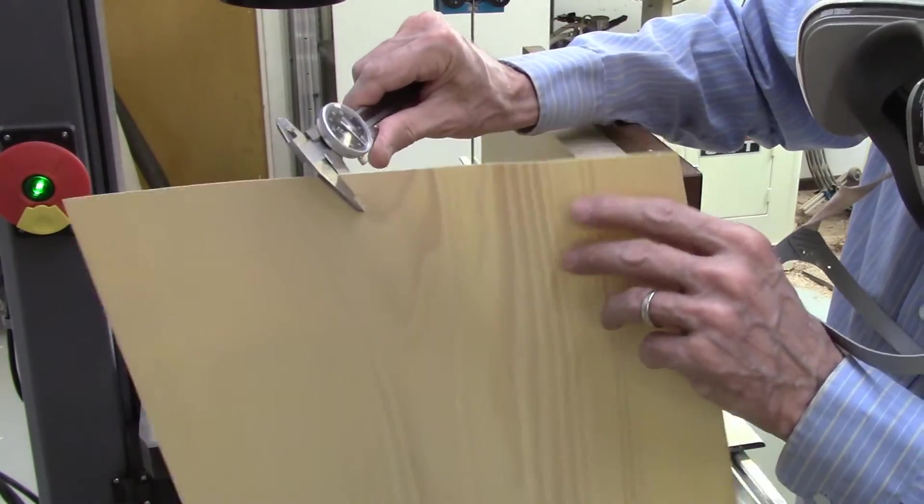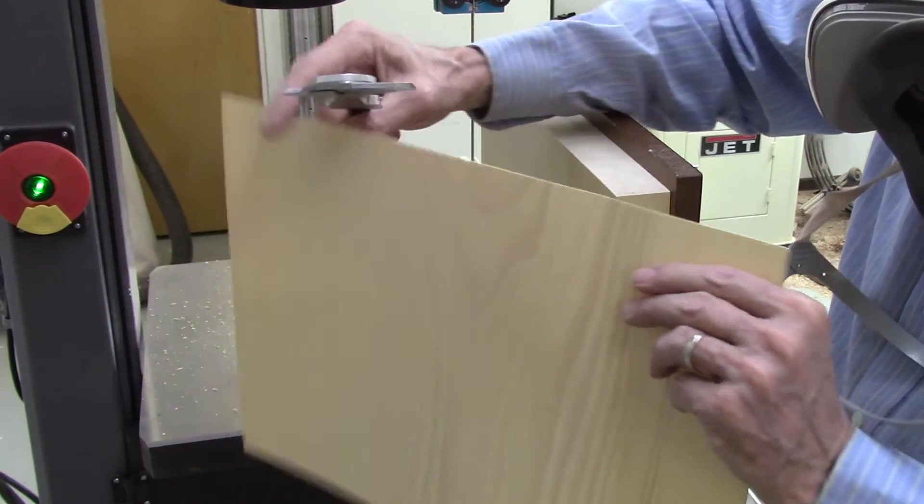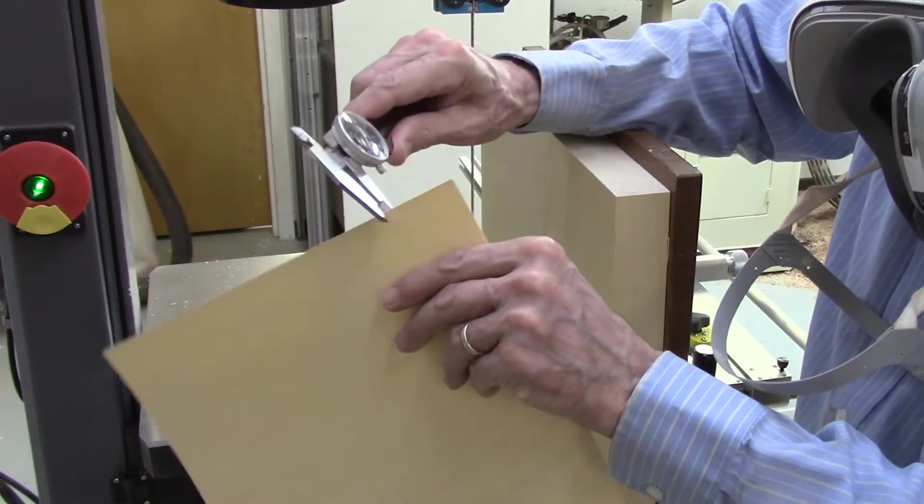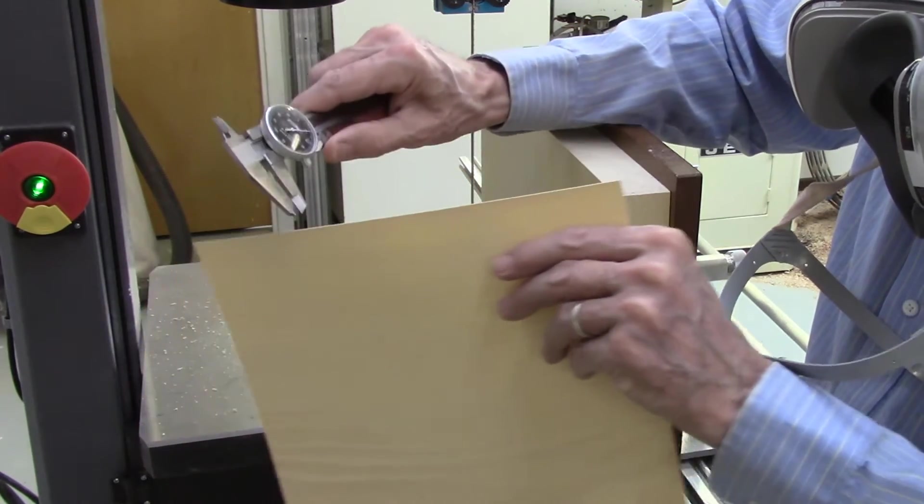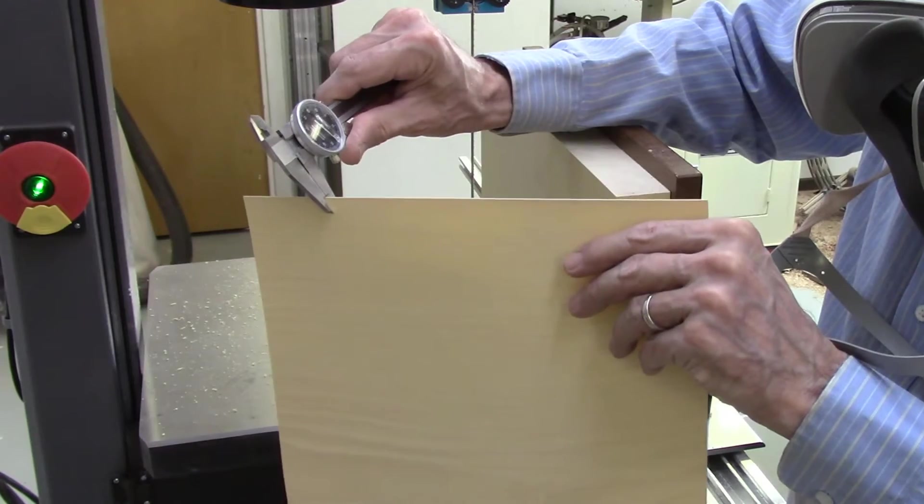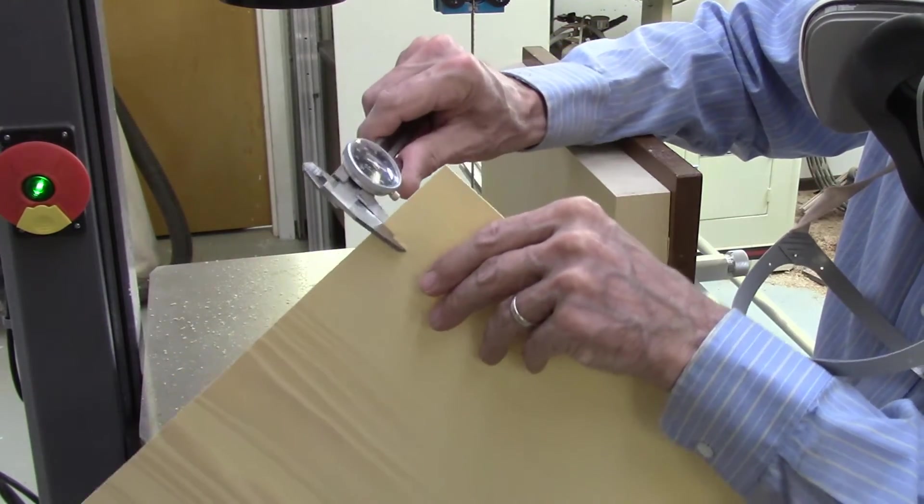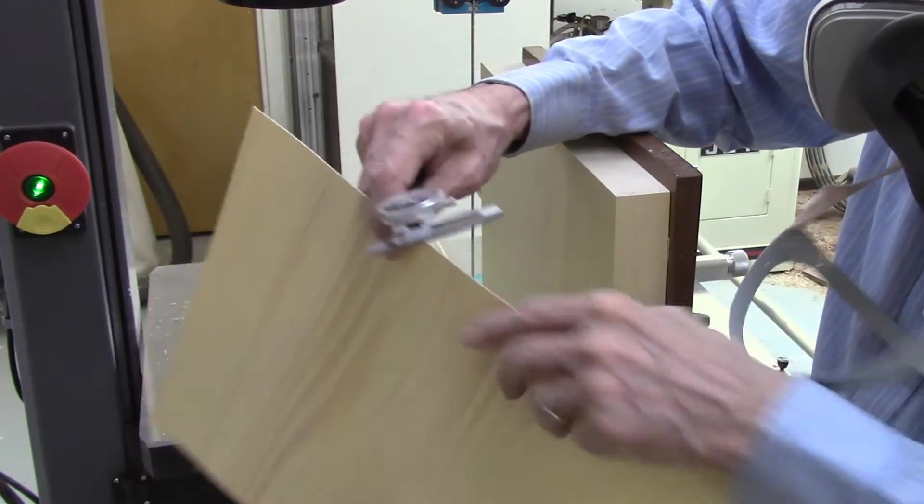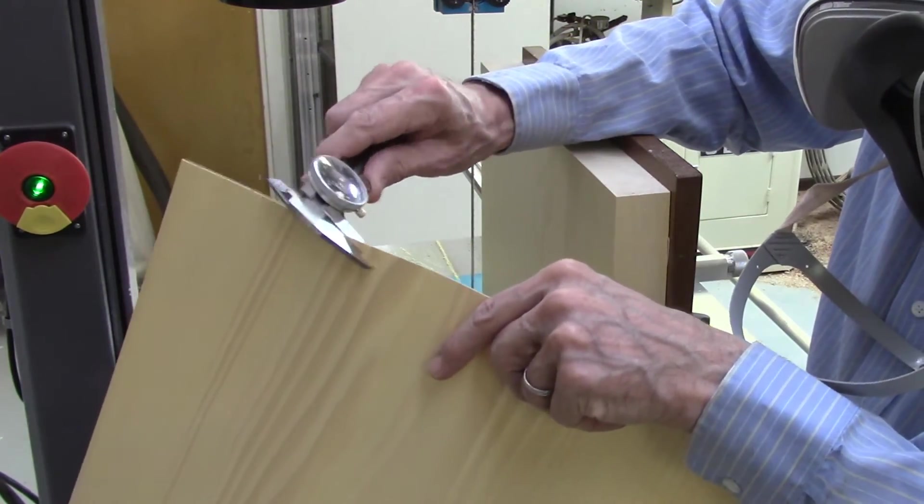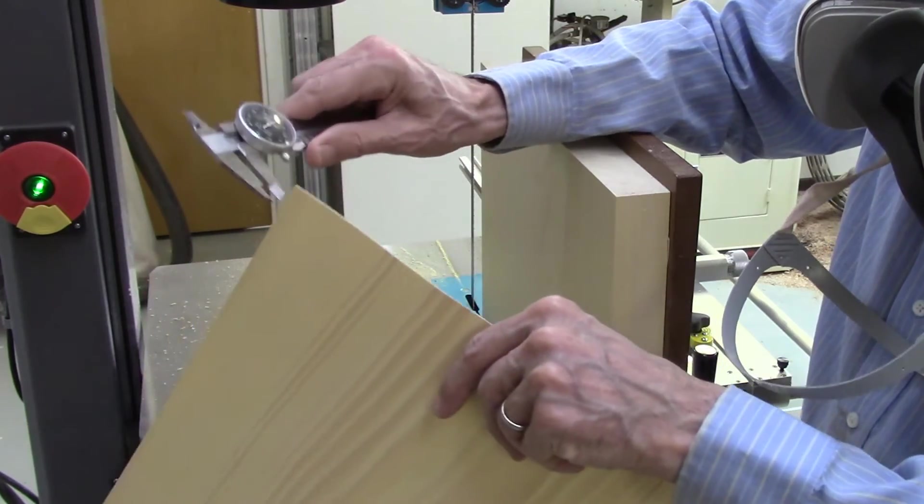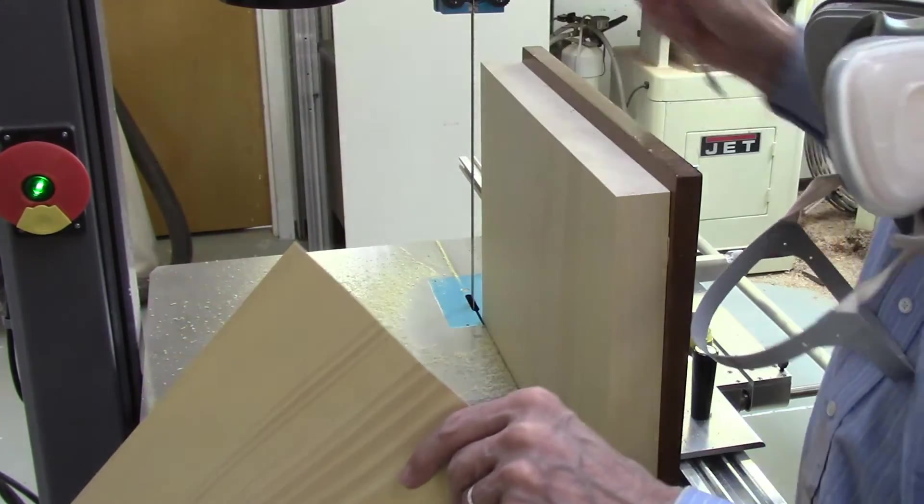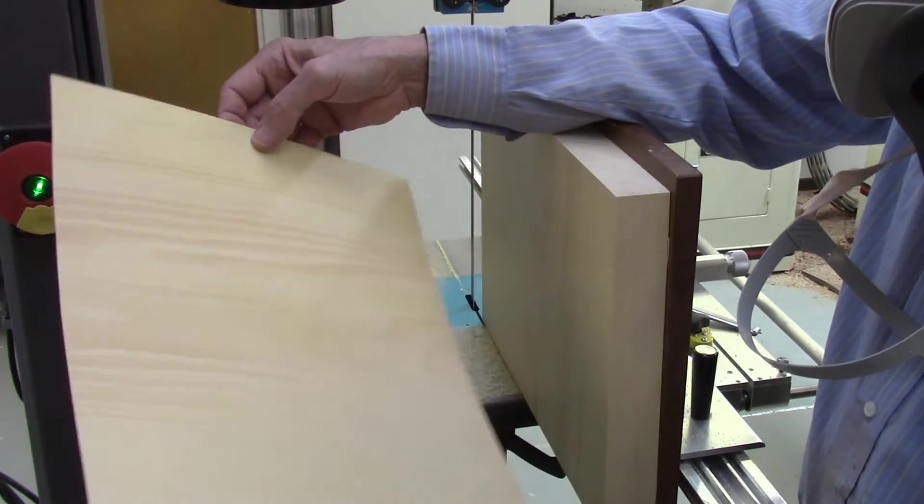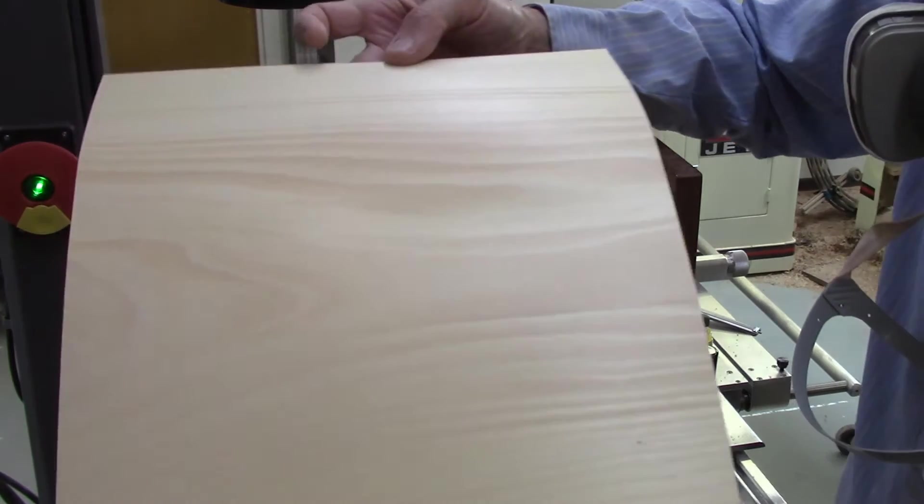25 thousandths, 26 thousandths, 25 thousandths, 25 thousandths, 24 thousandths, 25 thousandths, 25 thousandths. It's extremely straight, parallel, and a smooth surface.